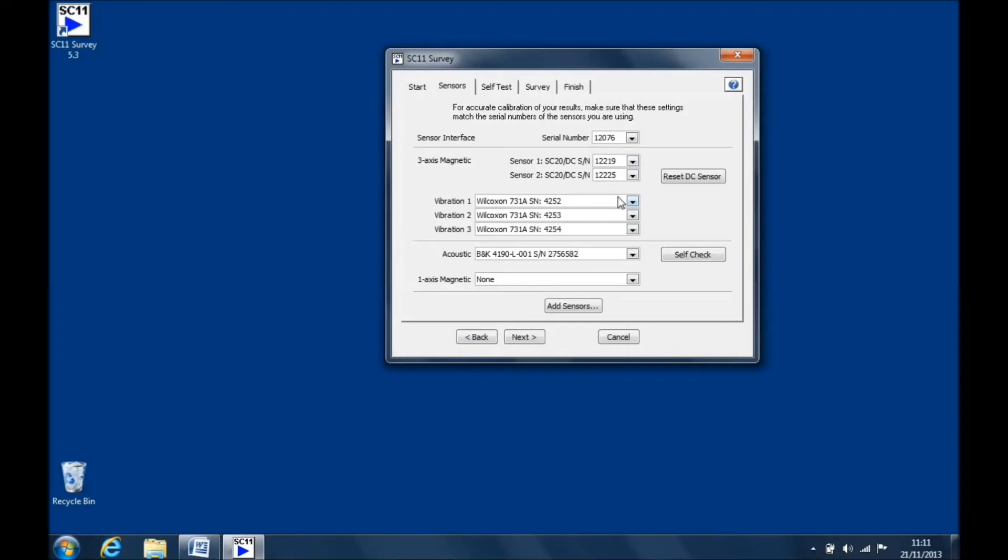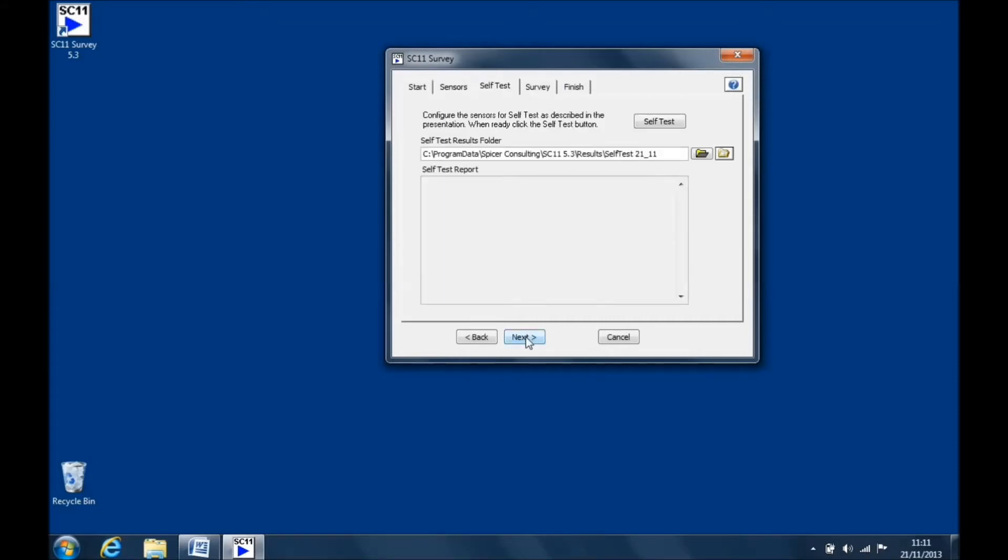With the sensors connected matching the sensors selected on the sensors tab, move forward onto the next tab. Click the self-test macro button to perform the macro running the self-test.